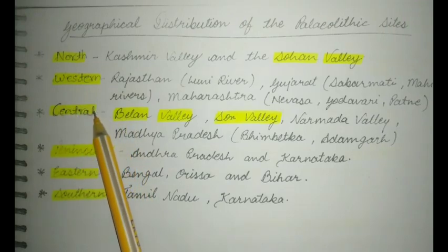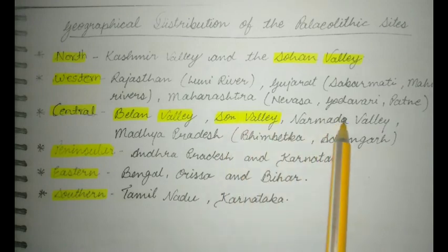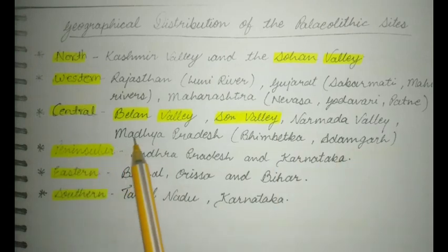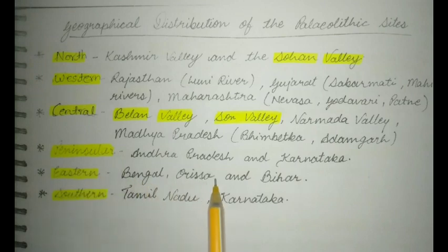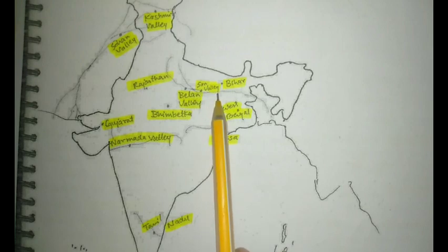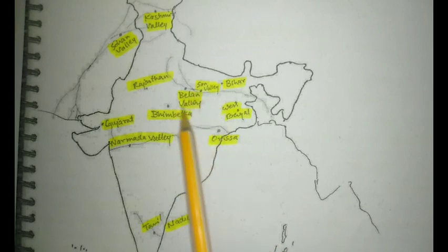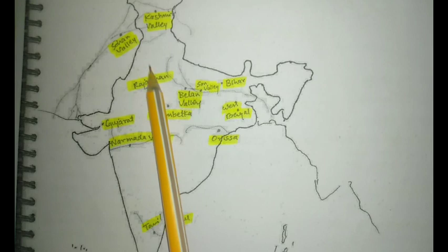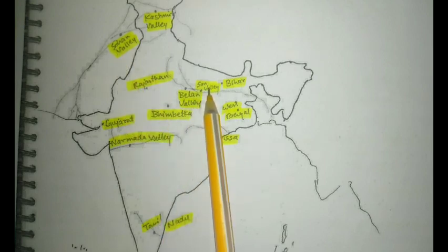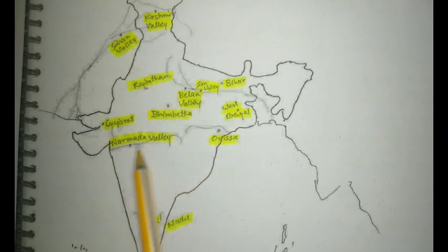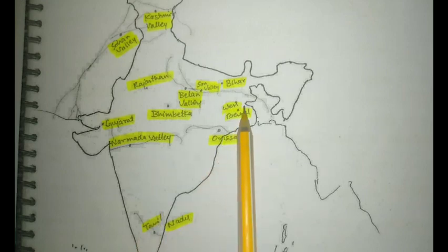Central: Balan Valley, Chon Valley, Narbada Valley. Madhya Pradesh: Bimbetka, Adamgad. Peninsular: Andhra Pradesh and Karnataka. Eastern: Bengal, Odisha and Bihar. Southern: Tamil Nadu and Karnataka. Balan Valley and Sohan Valley are in our syllabus, so these two are important. This is Kashmir Valley, this is Sohan Valley. Note: there are differences between Sohan and Sohan Valley.